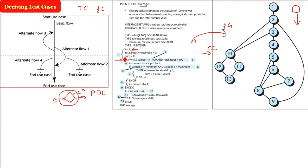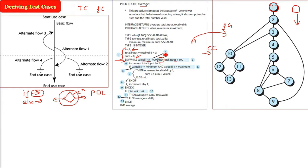From i equals one through the do-while, with sum equals zero - these are just declarations or initializations. But we have to worry about the do-while. So from i equals one to the do-while, we can regard all of this as node number one. As I said, we are mainly interested in conditional statements because that will be the branching point we need to test. Now inside this do-while, we have two different conditions combined with an AND operator - a compound statement. We take the first condition as node two and the second as node three.